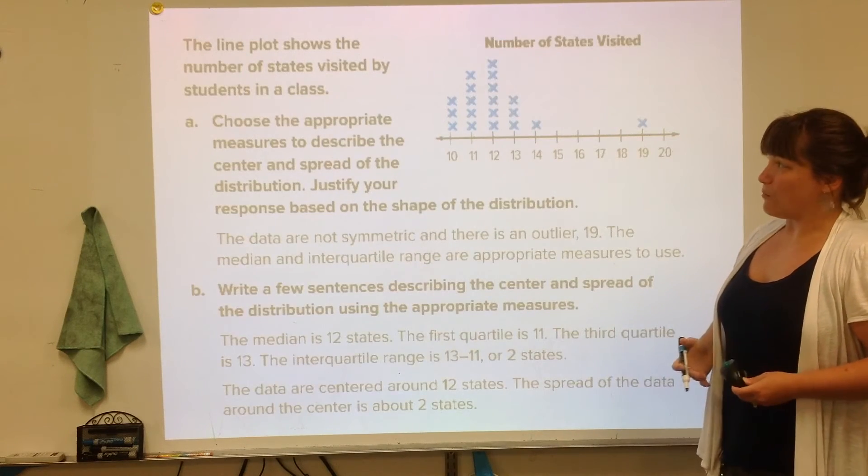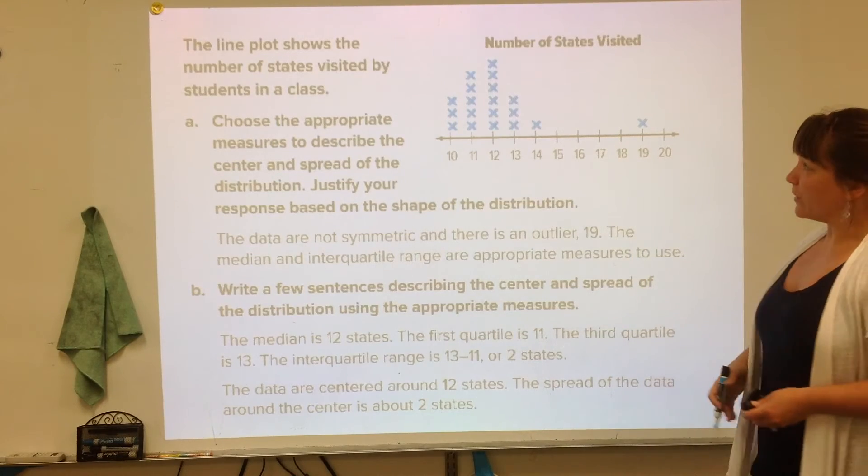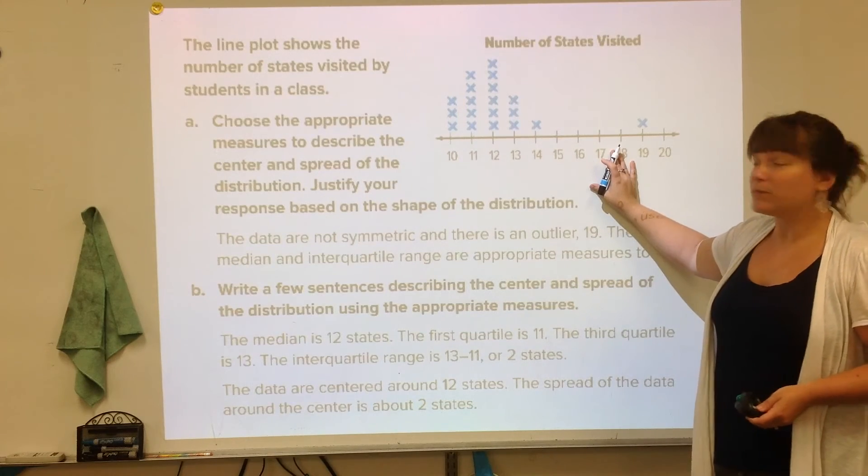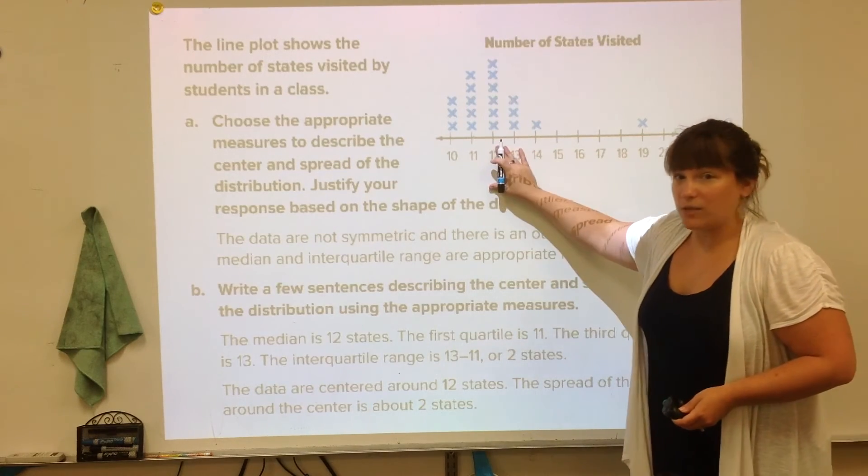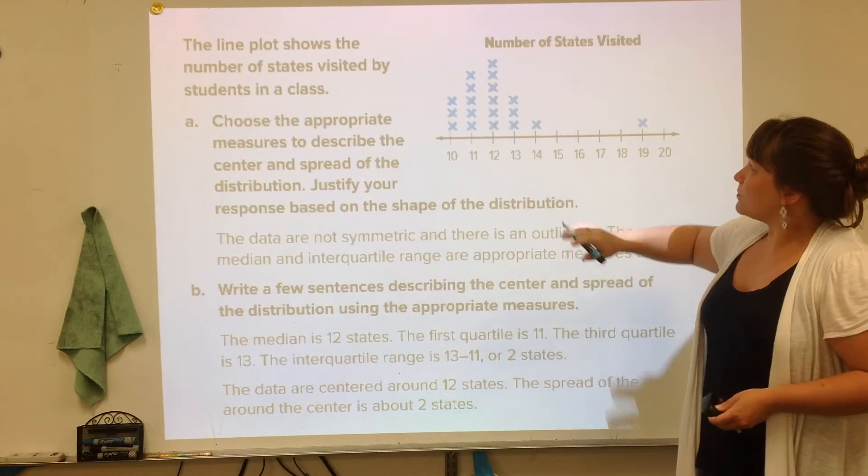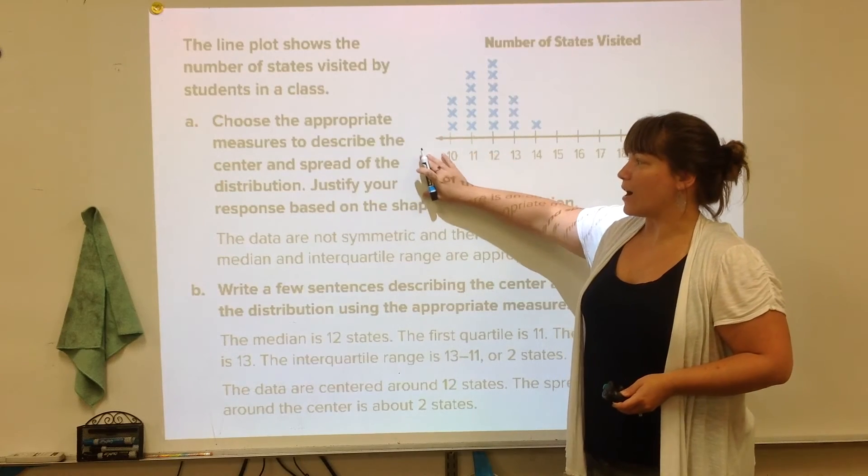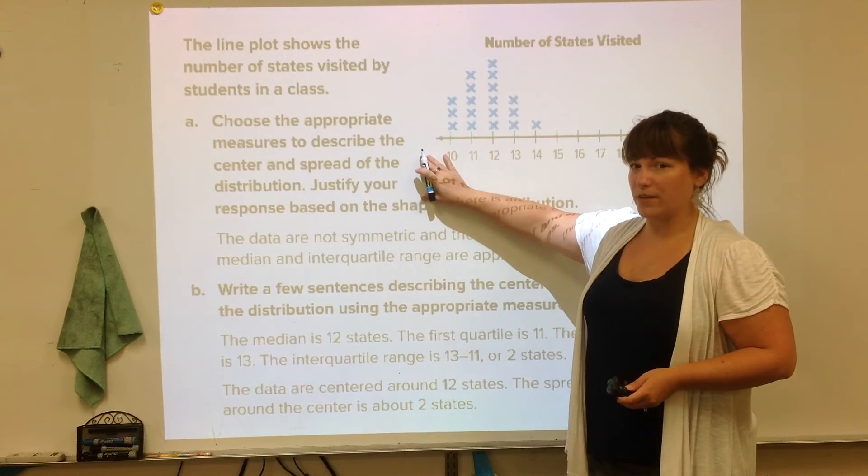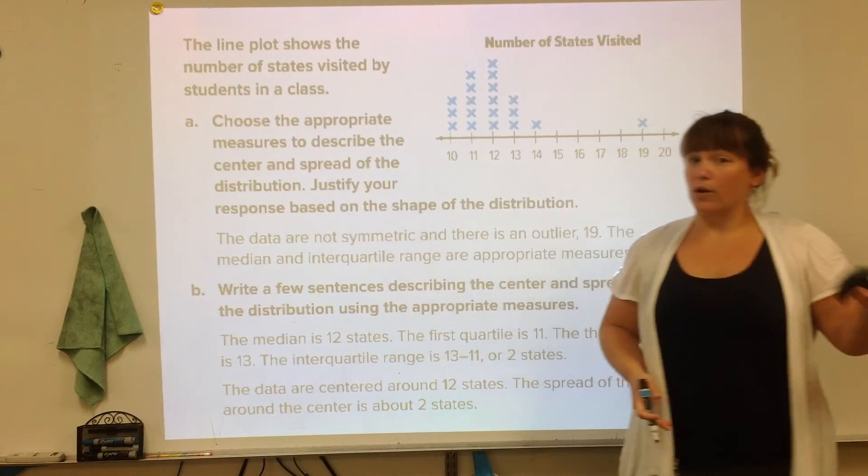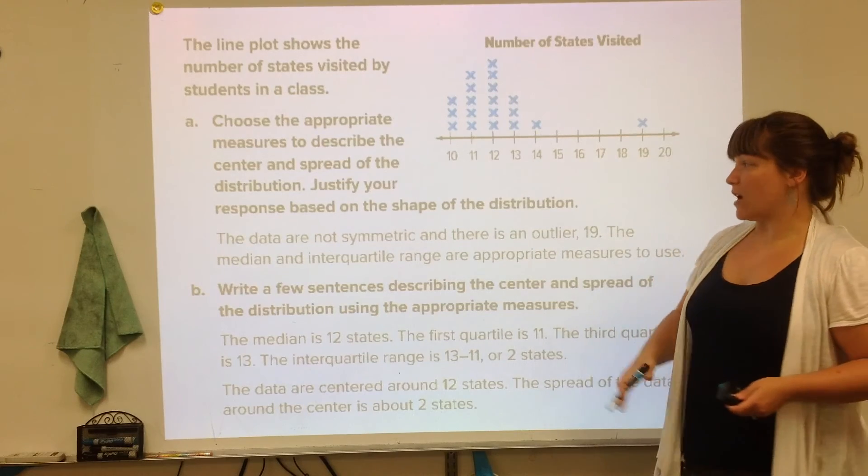So this is an example. You don't have to write anything. However, I do want you to listen through the entire explanation. Here is a line plot showing some data. It clearly is not symmetrical. The directions, let me back up, say that we're going to choose an appropriate measure to describe the center and the spread. So we either have to pick mean or median or MAD or IQR.